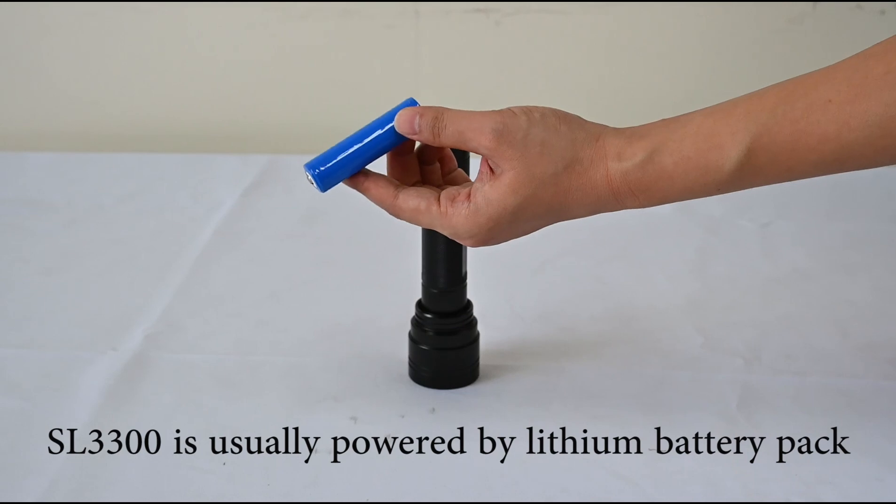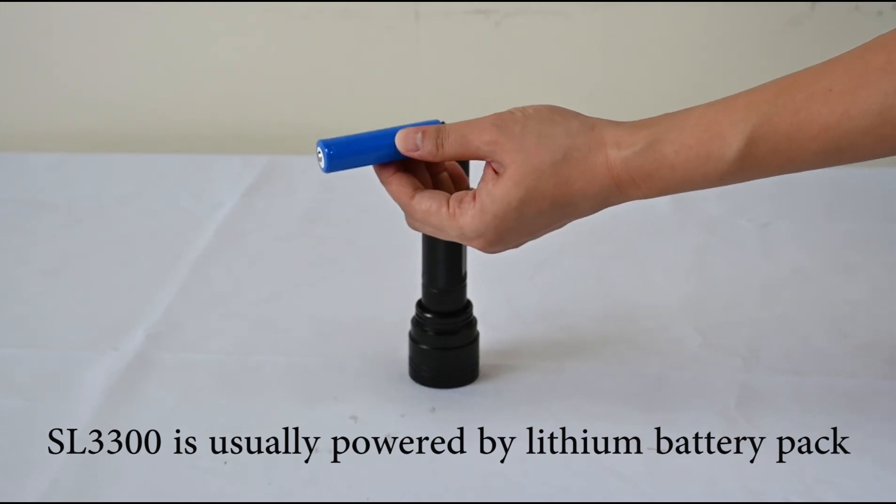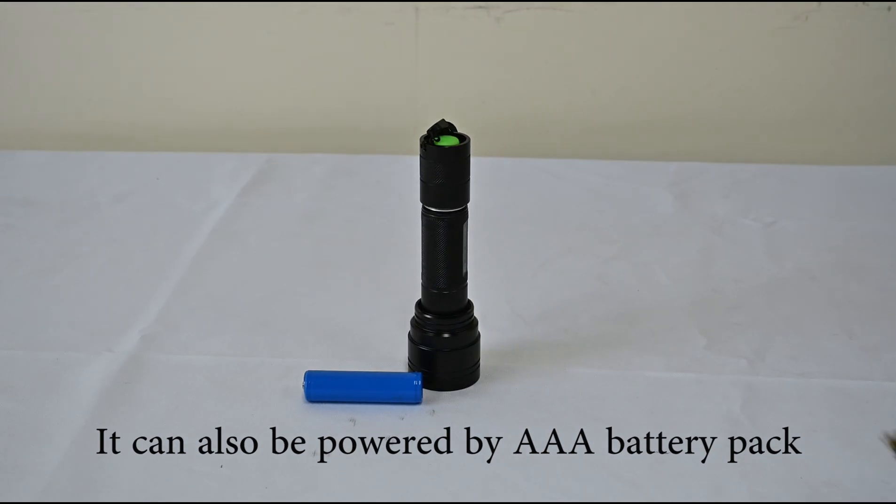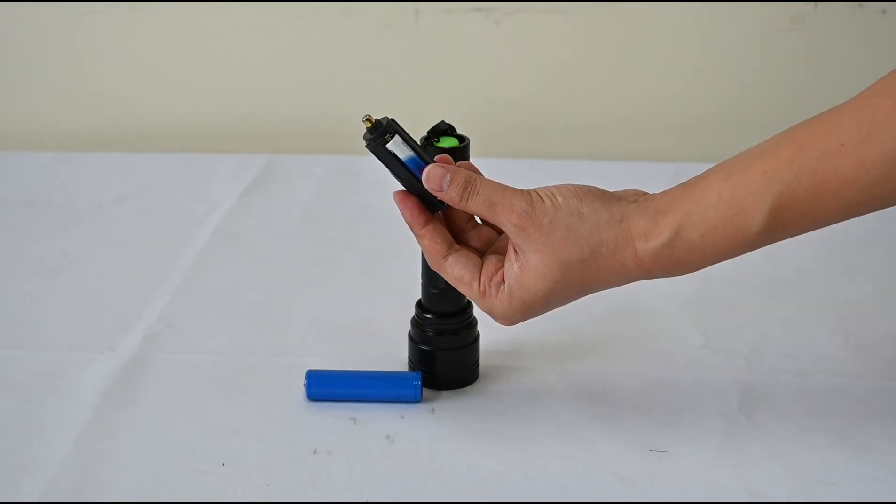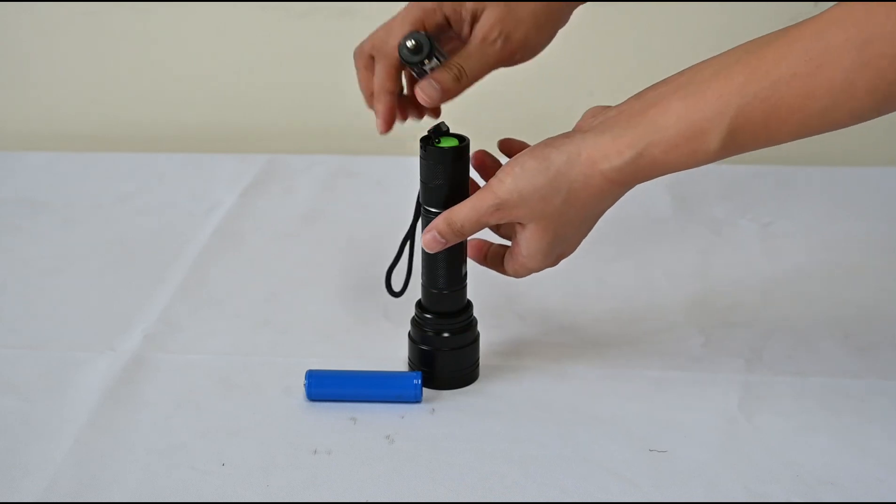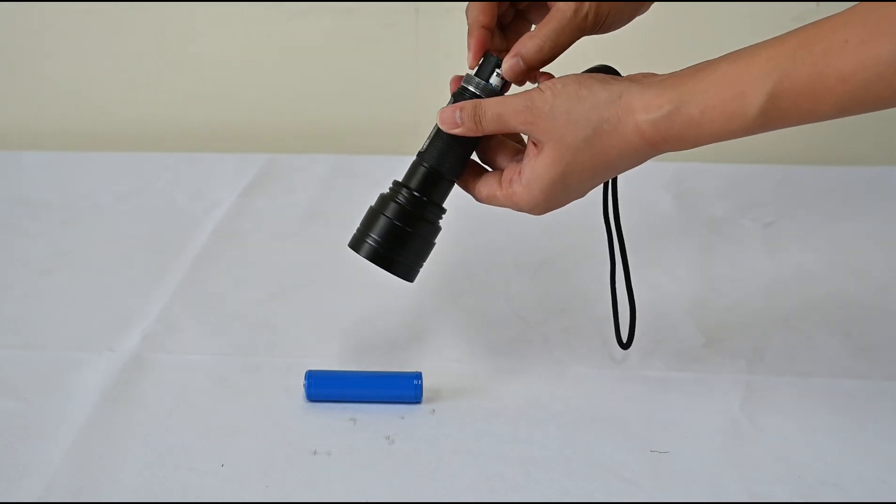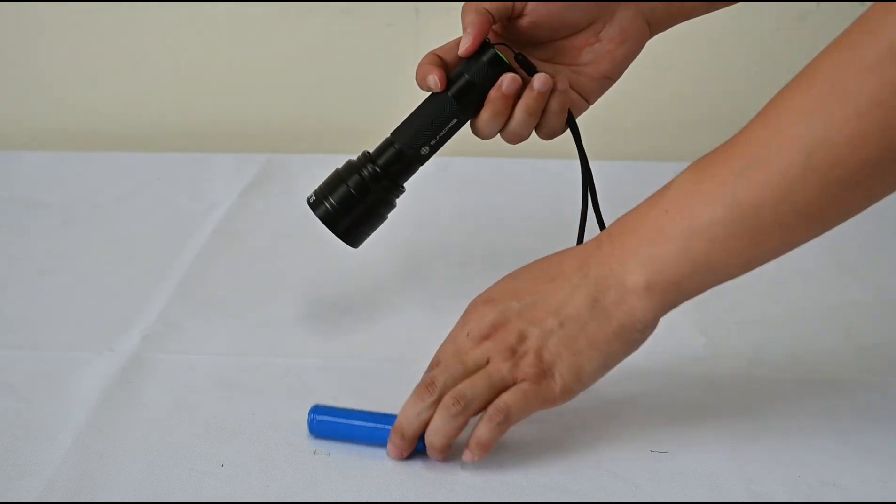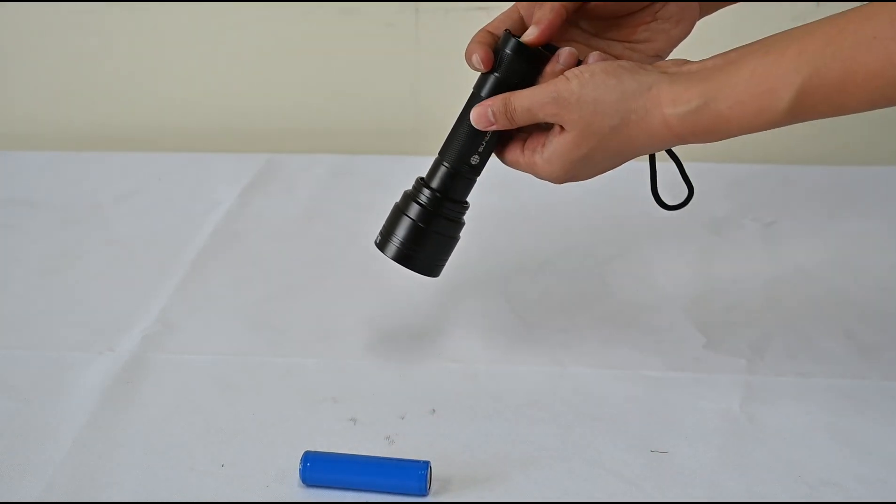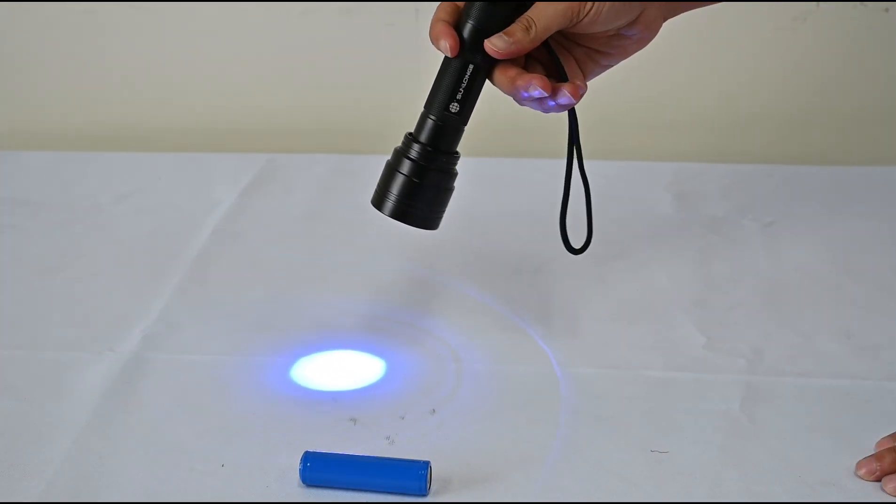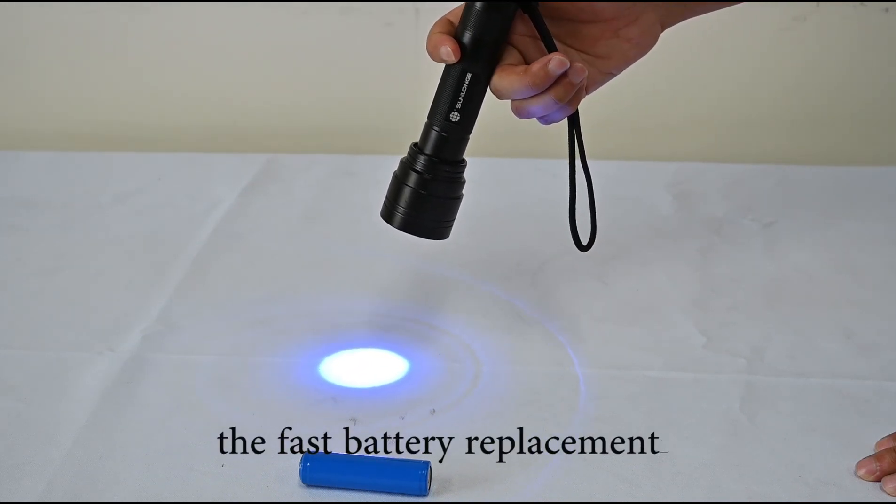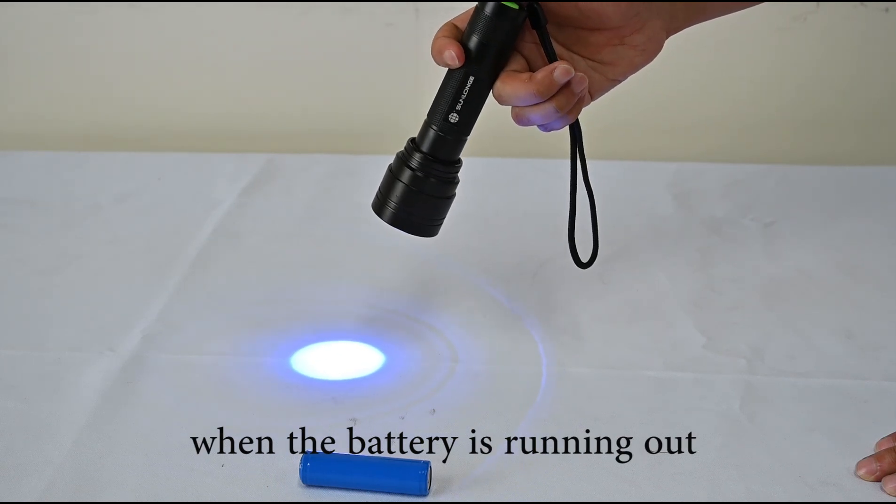SL3600 is usually powered by the design battery pack. More importantly, it could also be powered by the AAA battery pack. We will make a demonstration. See? This function is quite suitable for fast battery replacement when the battery runs out.